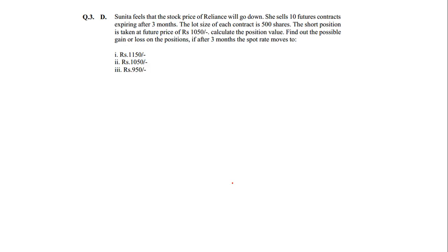The next question, Question 3D: Sunita feels that the stock price of Reliance will go down. She sells 10 future contracts expiring after 3 months. The lot size of each contract is 500 shares. She is taking a short position — short means she has sold. The contract is taken at a future price of 1050. We need to calculate the position value and find the possible gain or loss if after 3 months the spot rate moves to 1150, 1050, and 950 — three situations.